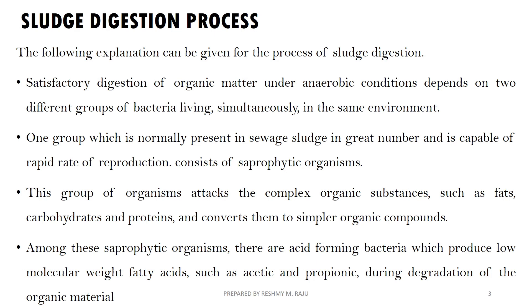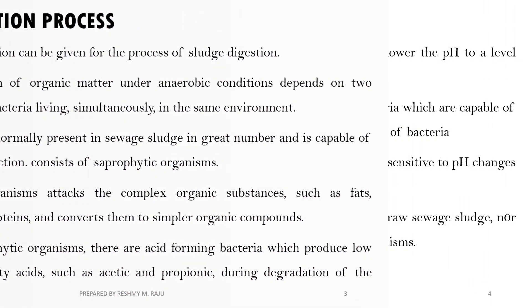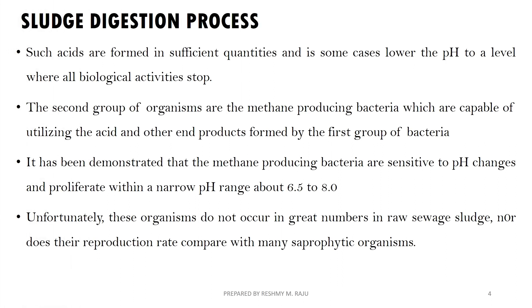In sludge digestion, there are two different groups of bacteria which are living simultaneously in the same environment. The first group attacks organic substances — fats, carbohydrates, proteins — and converts them into organic compounds. These are acid-forming bacteria. They convert fatty acids.